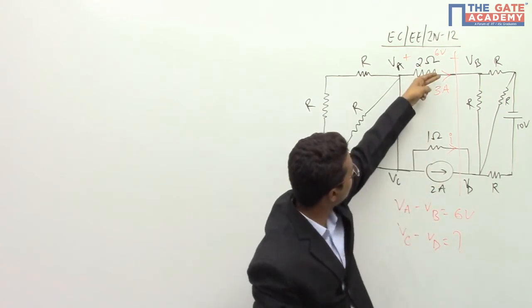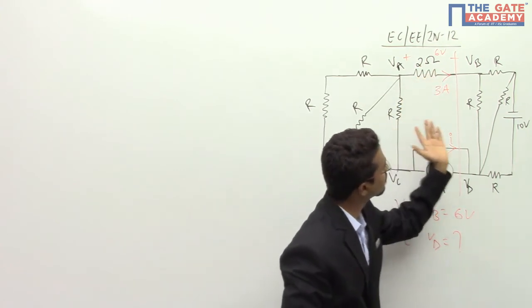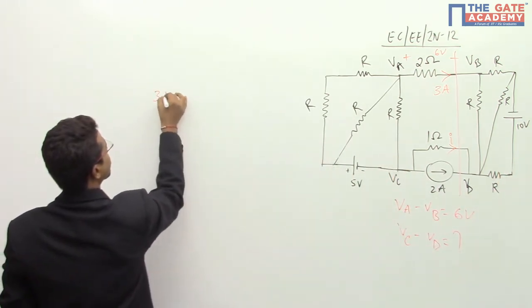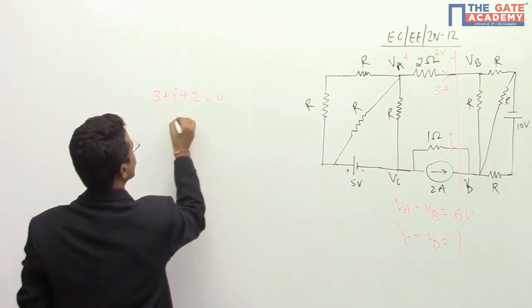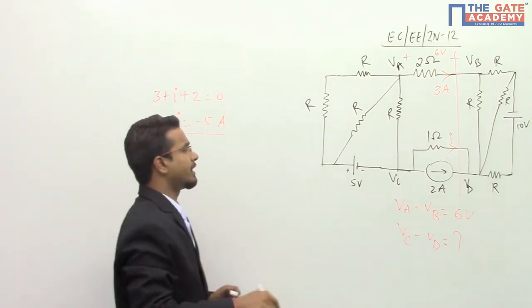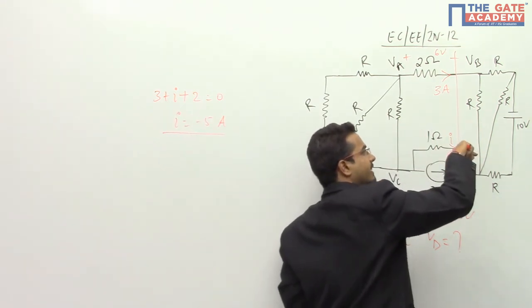And we are able to see I have assumed all the currents are going from this side to this side. So the number will be 3 plus I plus 2 is equal to 0. So I is equal to minus 5. If I is minus 5 in this direction.